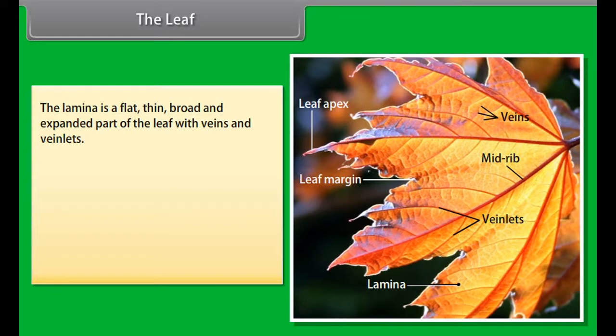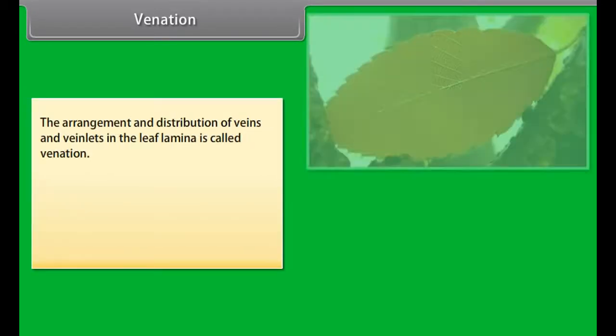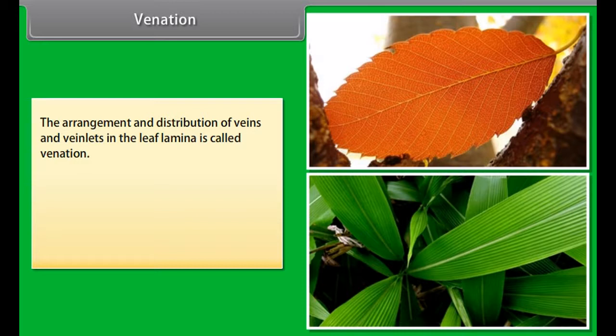The petiole exposes the lamina to the sunlight. The lamina is a flat, thin, broad, and expanded part of the leaf with veins and veinlets. The middle prominent vein is called the midrib. The sides of lamina form the margin and tip forms the leaf apex. Veins contain the vascular tissue and act as channels for the transport of food, water, and minerals, and as the skeleton of lamina.